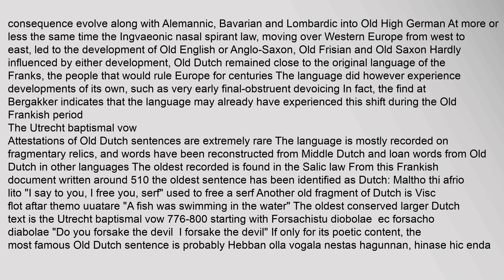Attestations of Old Dutch sentences are extremely rare. The language is mostly recorded on fragmentary relics, and words have been reconstructed from Middle Dutch and loanwords in other languages. The oldest recorded text is found in the Salic law, a Frankish document written around 510. The oldest sentence identified as Dutch is 'Maltho thi afrio lito' (I say to you, I free you), used to free a serf. Another old fragment is 'Visc flot aftar themo uuatare' (A fish was swimming in the water). The oldest conserved larger Dutch text is the Utrecht baptismal vow (776–800).